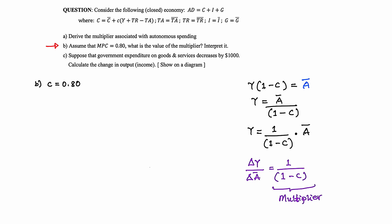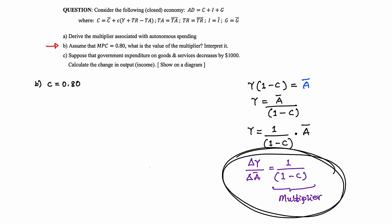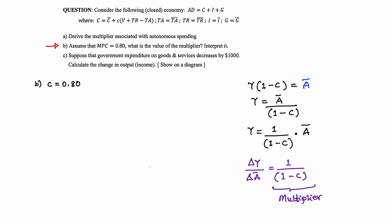We need to calculate the value of the multiplier. From our derivation, the multiplier is 1 over (1 minus C). Let's represent the multiplier with K. So K equals 1 over (1 minus 0.8), which gives K equals 1 over 0.2. Since 1 divided by 0.2 equals 5, the multiplier is 5.